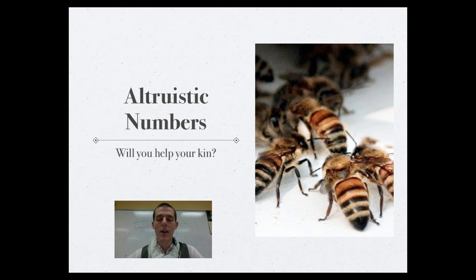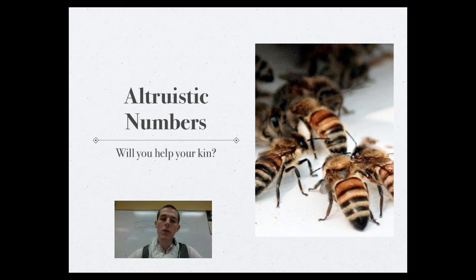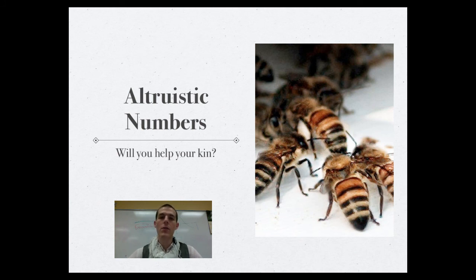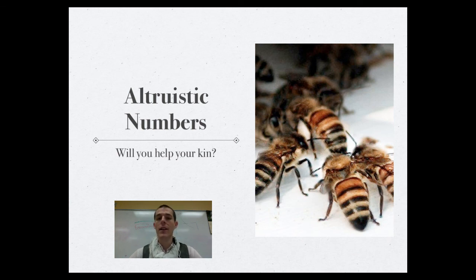Scientists like to put numbers to things. A scientist developed an equation to predict whether it is evolutionarily beneficial for an organism to act altruistically. The formula is based on how closely related one organism is to another, using that ratio of relationship to determine if helping another individual is beneficial. If the numbers show that helping increases the chances of your genetic material being passed on, natural selection would favor that action. If it would be more beneficial to pass your genetic material on directly rather than acting altruistically, then the formula predicts you will not act that way.